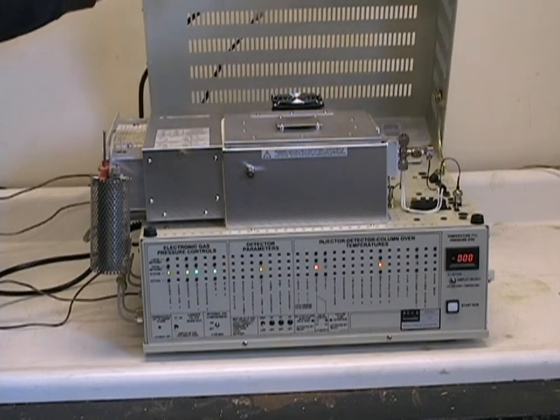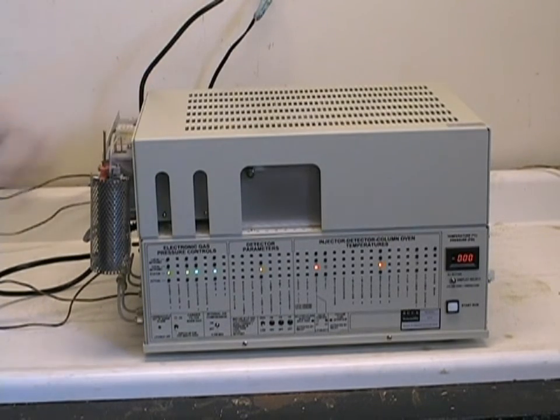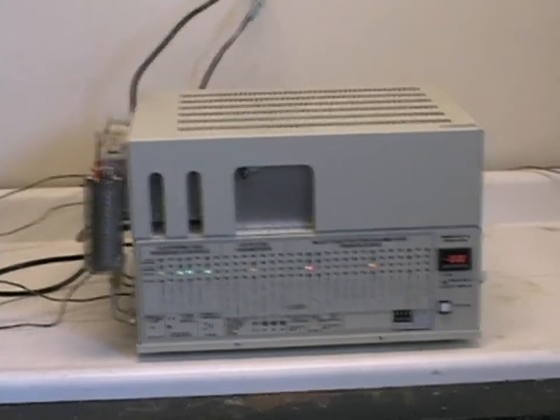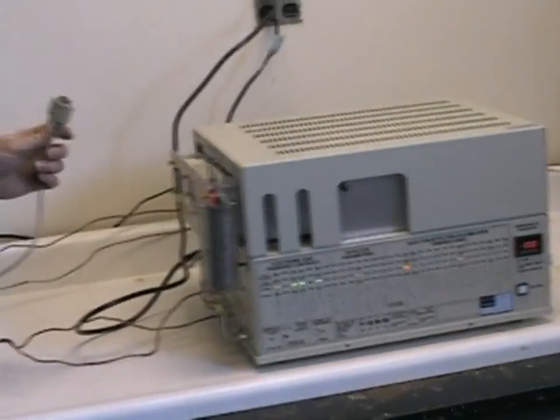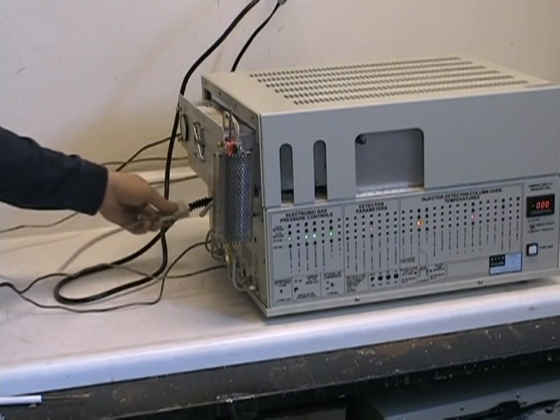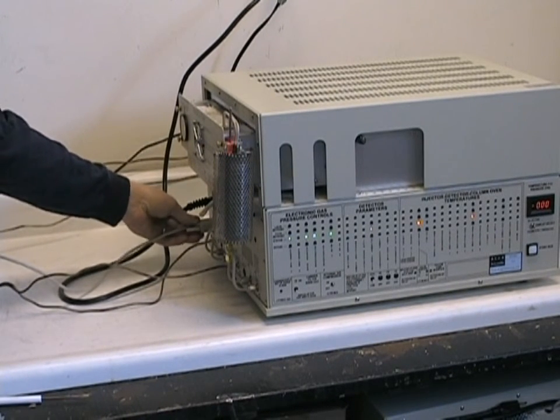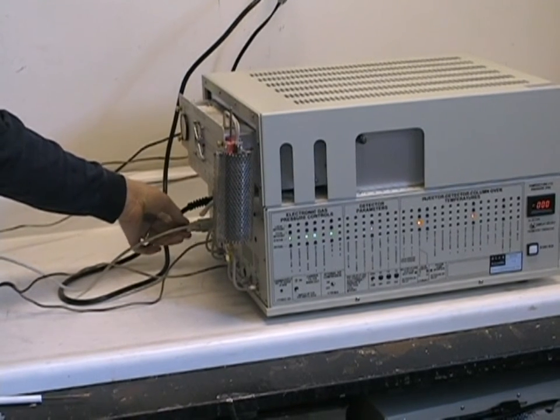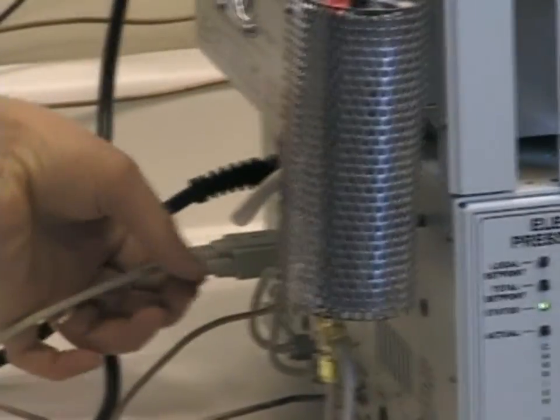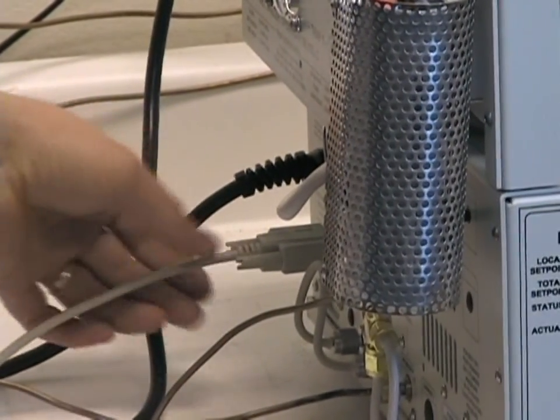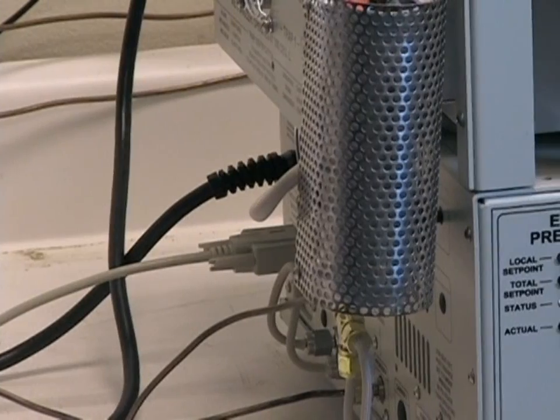We can now close the lid, and we are ready to plug in our PC using the 9-pin serial port and the interface cable provided on the left side of the GC. Be sure to tighten the fittings to make sure that you have a good tight electrical connection, since this is important for data quality transmission.